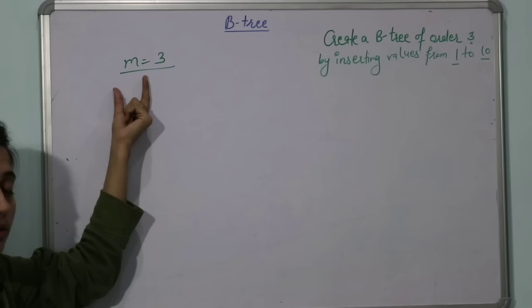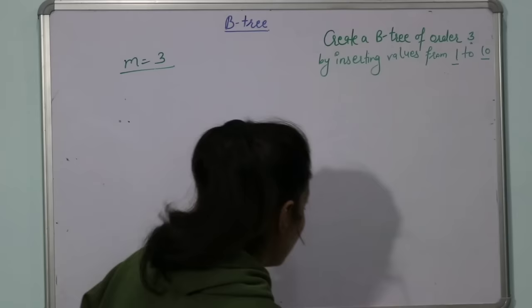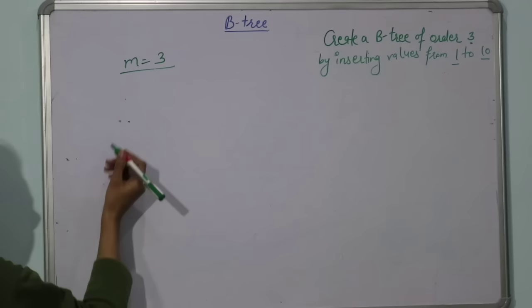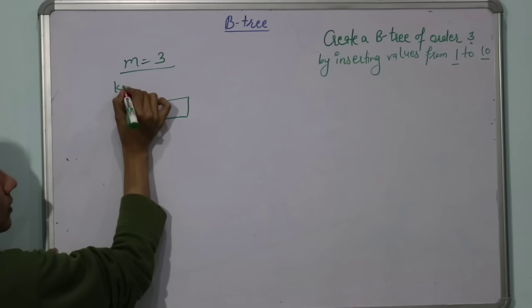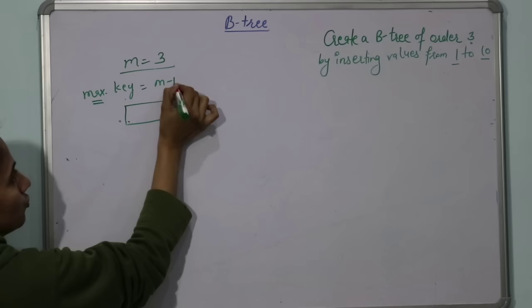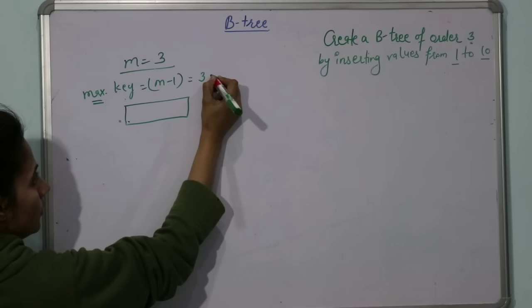Now start inserting. In this node, how many values can there be? We have maximum how many keys can there be for every node? m minus 1, from the properties I discussed in the last video. That is 3 minus 1, that is 2.